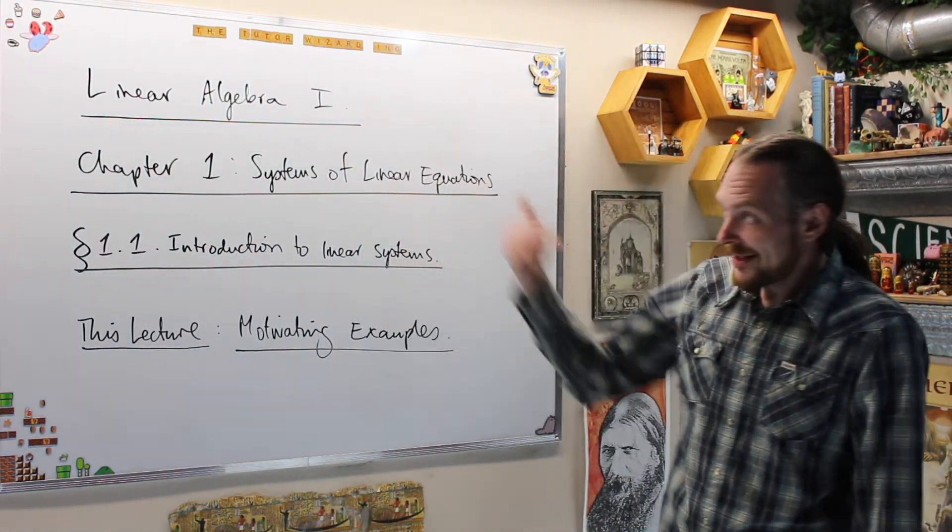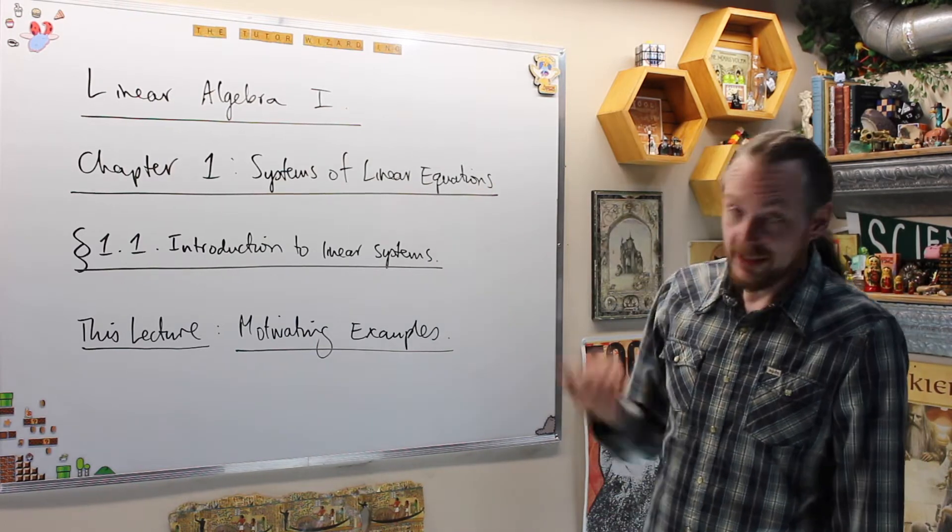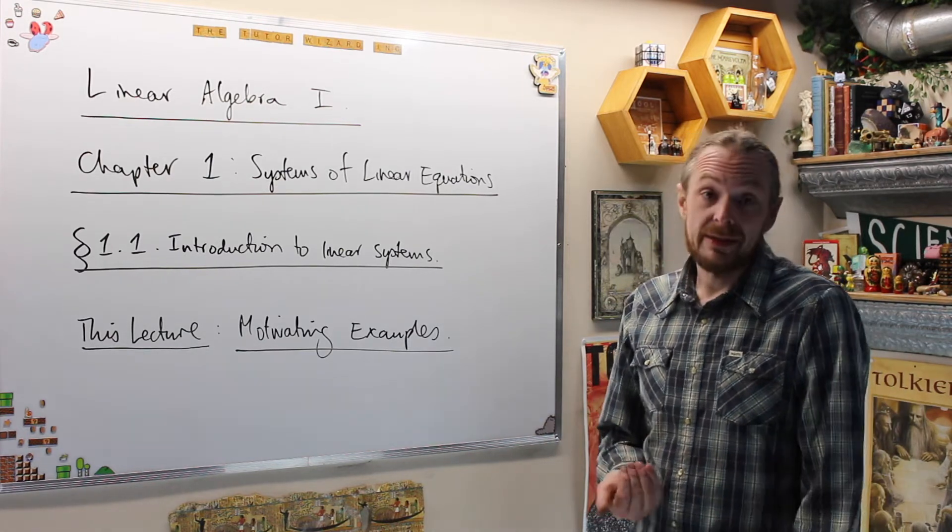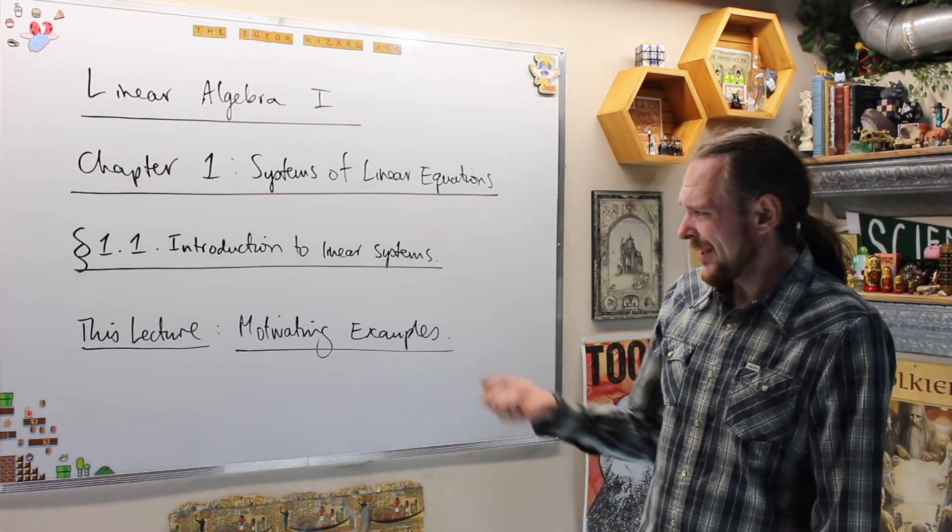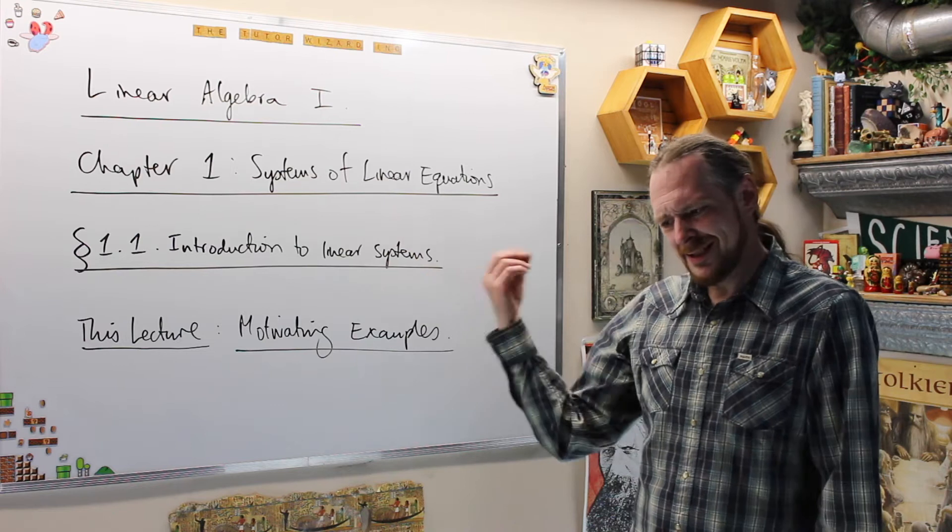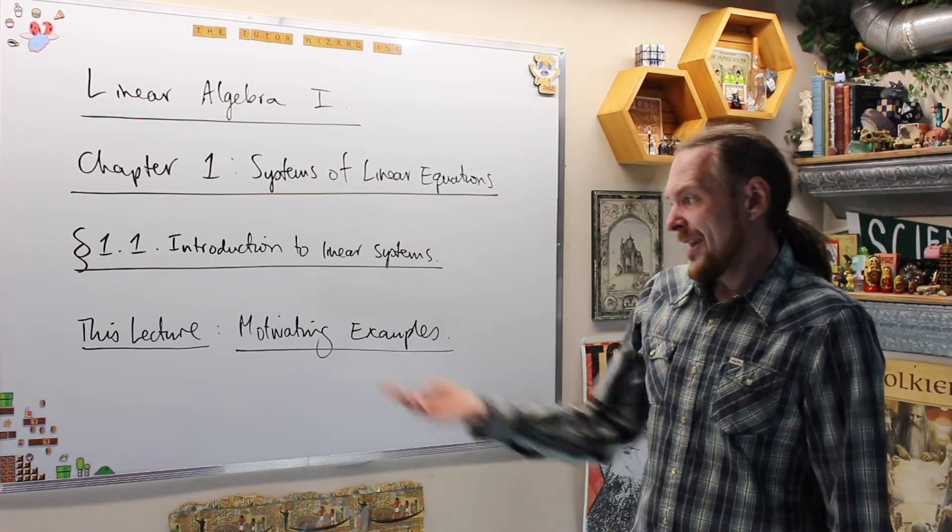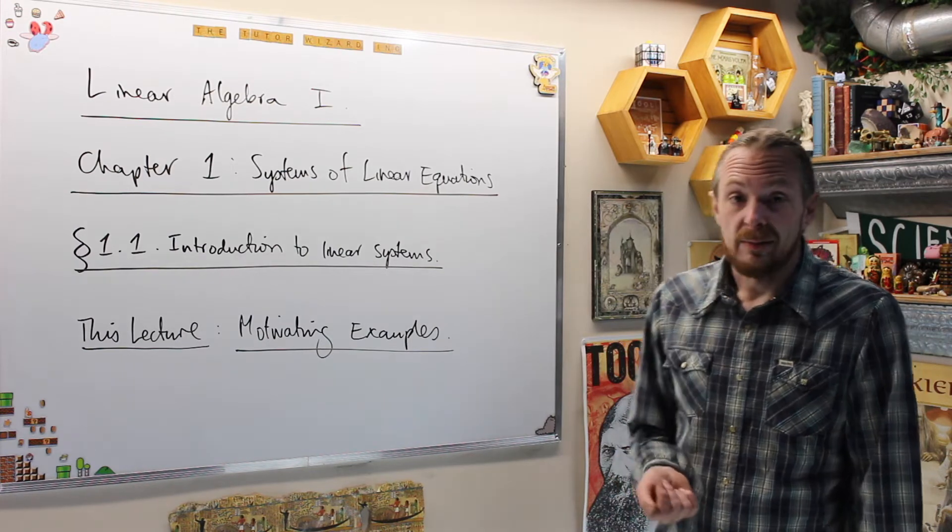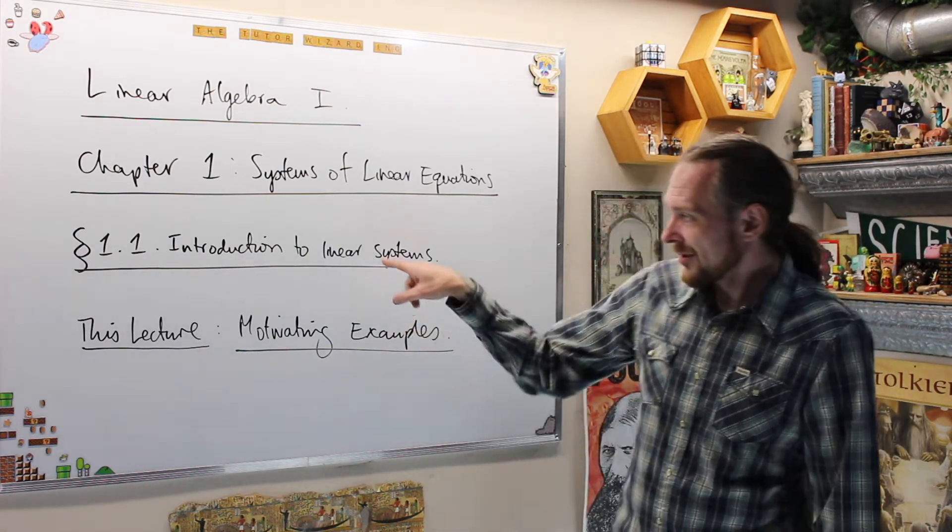What we're doing is Linear Algebra, Chapter 1, which is Systems of Equations. The first section will be an introduction to linear systems and what we mean by that, what is a linear equation, and what's a system of linear equations. We're going to start off specifically in this lecture with motivating examples.